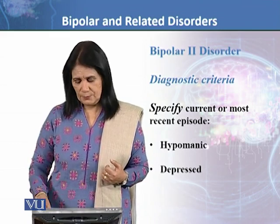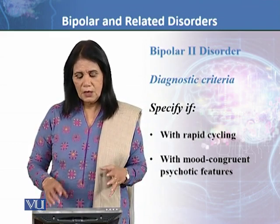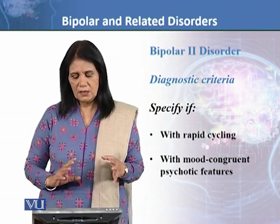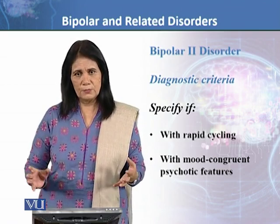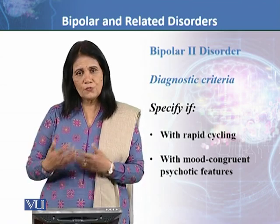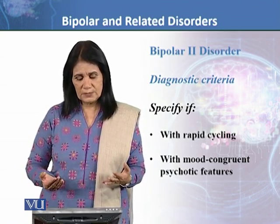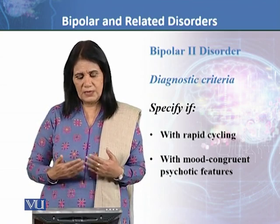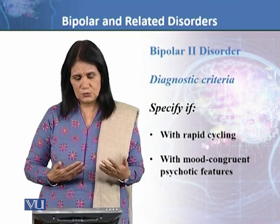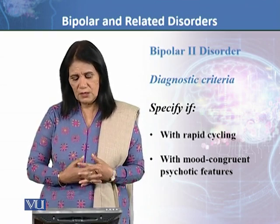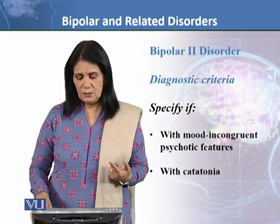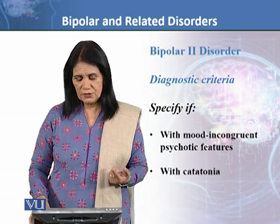So it is also important to report and specify the current episode clearly. You also have to specify rapid cycling — it is possible that the cycling is not so frequent, meaning shifting from one mood to another is not so rapid. But it is also possible that the shift in mood or phases is changing very rapidly, so it is important to report that too. Also specify with mood congruent psychotic features, with mood incongruent psychotic features, or with catatonia.